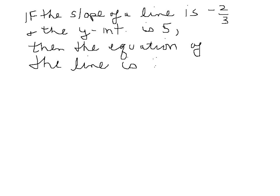Just as a simple example, suppose we're told that the slope of the line is -2/3 and the y-intercept is 5. Then what's going to be the equation of the line? Well, we just simply plug into that form: y equals -2/3 x plus 5. What could be simpler than that?